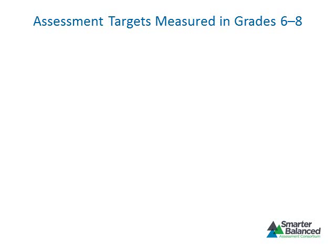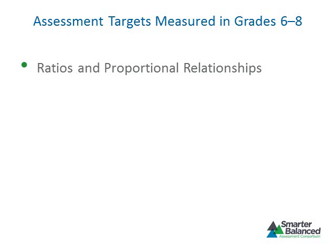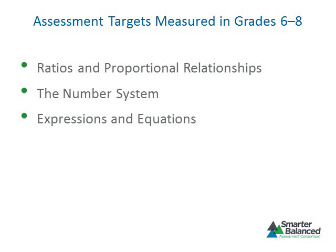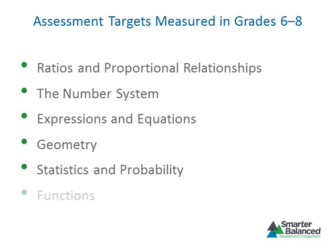For grades 6 through 8, there are six categories of assessment targets that are measured, including: Ratios and proportional relationships, The number system, Expressions and equations, Geometry, Statistics and probability, and Functions. Let's look at the progression of knowledge and skills measured for each assessment target across grades 6 through 8.